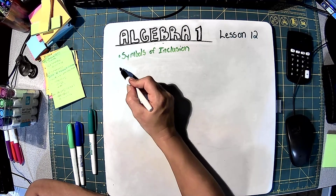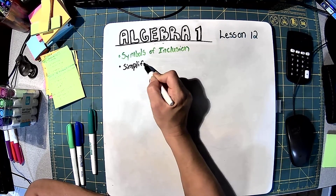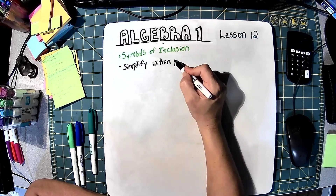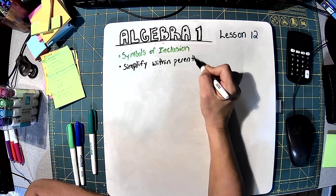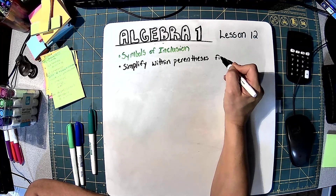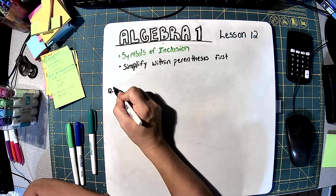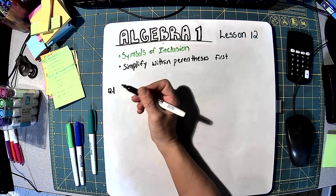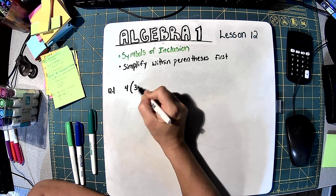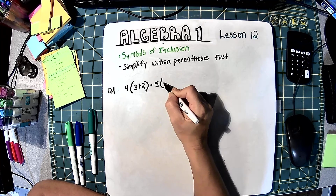We're going to simplify within parentheses first, before you do any add, subtract, multiply, or divide — any of that. So example 12.1, and I'm on page 55 of your textbook. 12.1 says 4 times (3 plus 2), minus 5 times (6 minus 3).